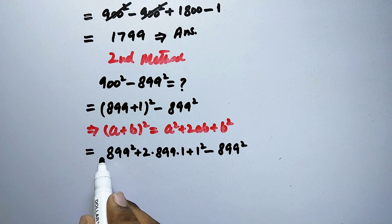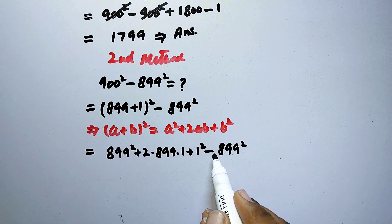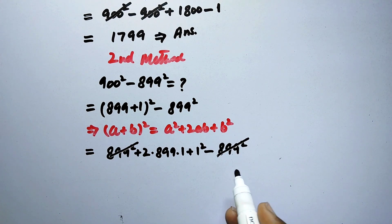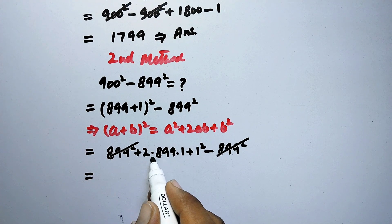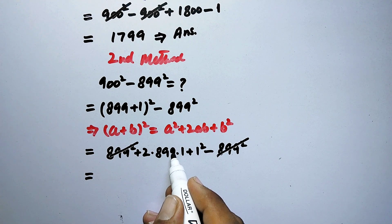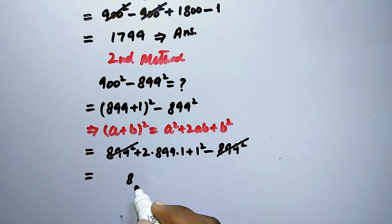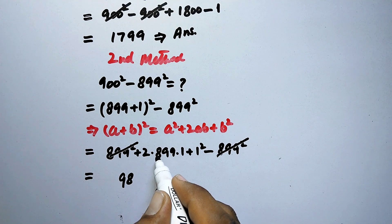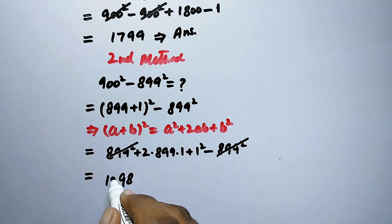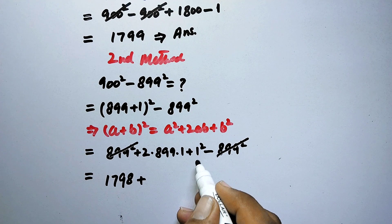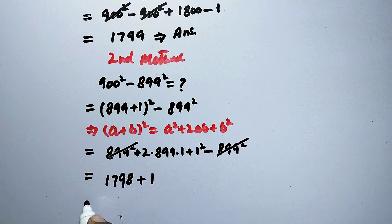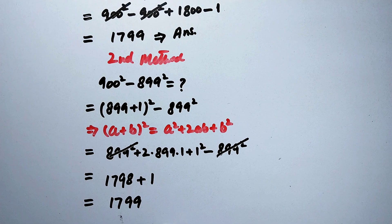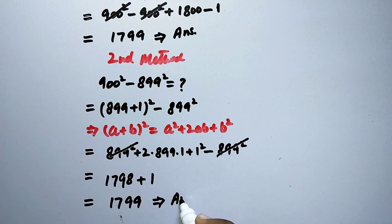So now here we can see that this is positive 899² and this is negative 899², so they will be cancelled by each other and the remaining here is 2 × 899. So here 9 × 2 = 18, 1 is carry. 9 × 2 = 18 + 1 = 19, 1 again carry. 8 × 2 = 16 + 1 = 17. And plus 1² = 1. So here final answer is 1799. That is the same answer as above.